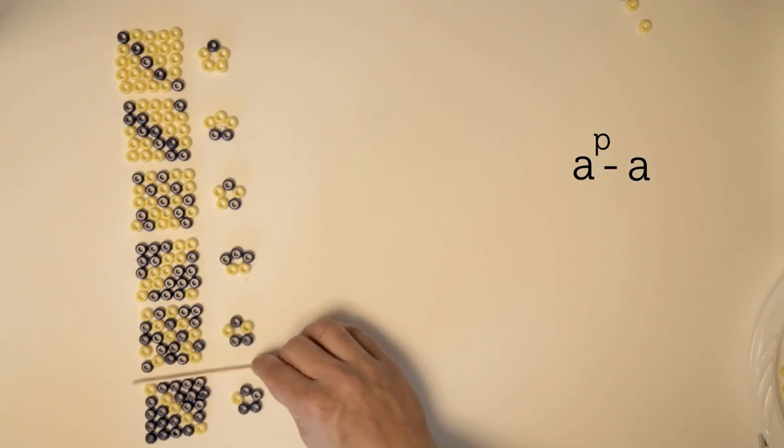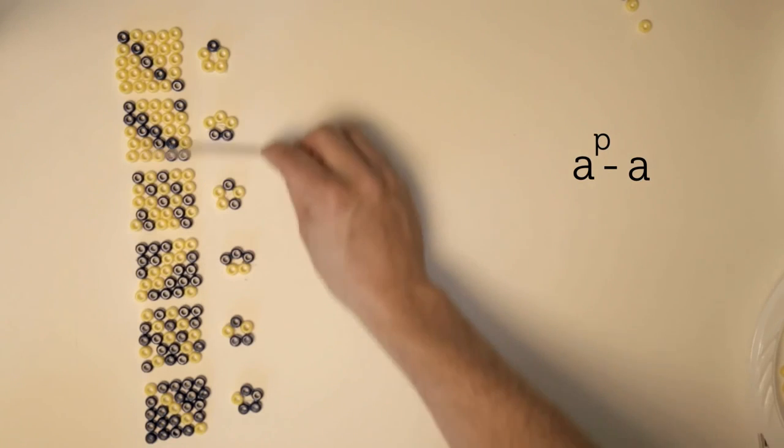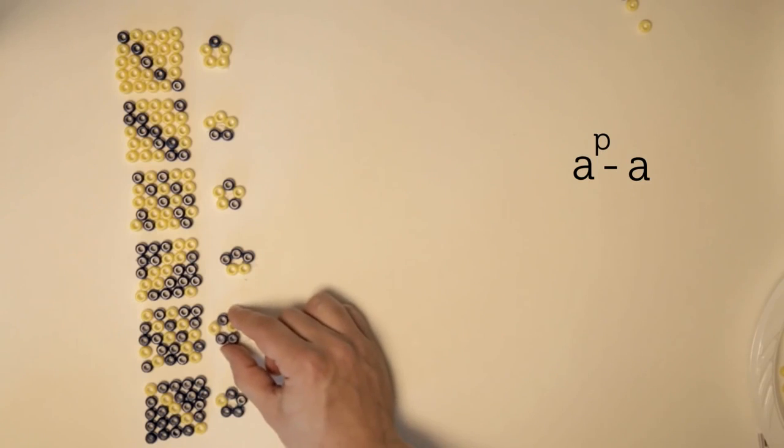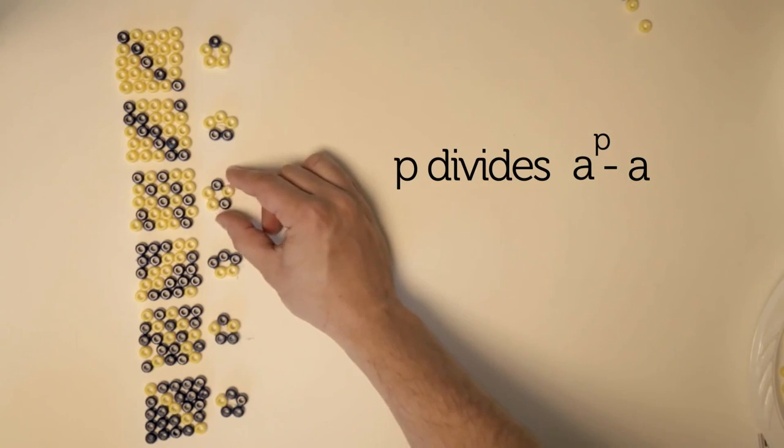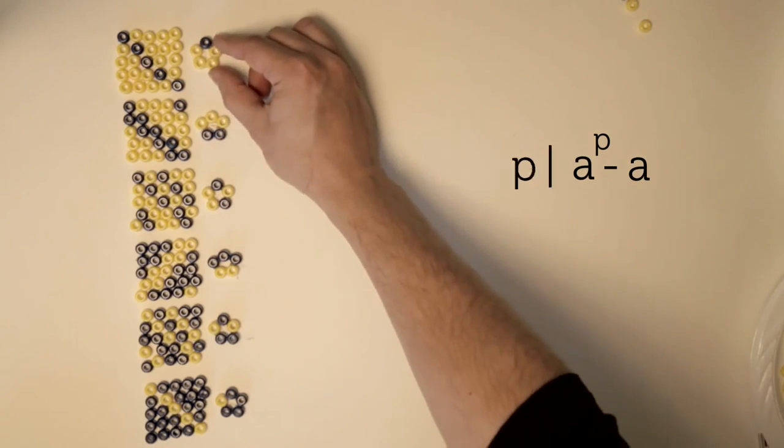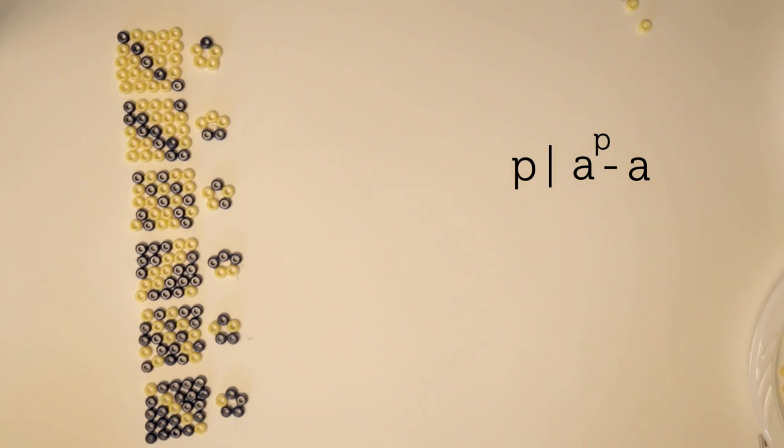And when he glues these strings together, they will fall into groups of size P, since each earring must have a cycle length of P. Therefore, P divides A to the power of P minus A. And that's it.